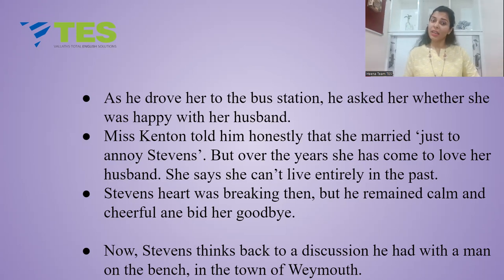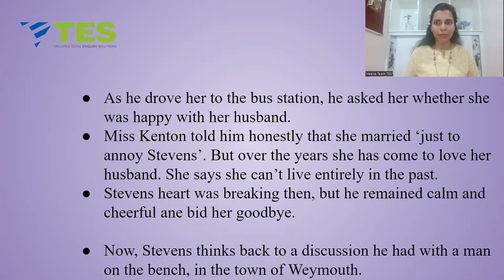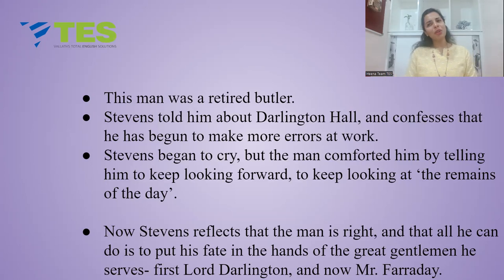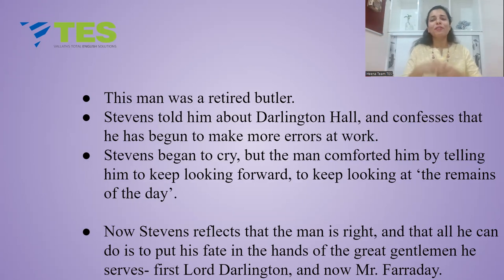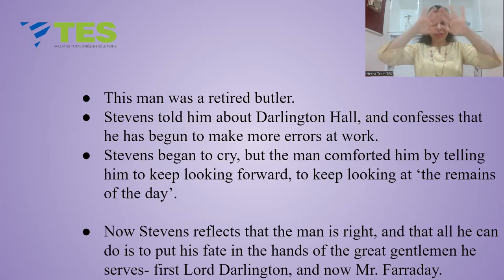Stevens thinks back to a discussion he had with a man on a bench in the town of Weymouth, where he was sitting by the beach. This man was a retired butler. Since he was a butler, Stevens could open his heart to him. Stevens told him about Darlington Hall and confessed that he has begun to make more errors at work. Because of his age and mental state, he can no longer concentrate as well. Stevens began to cry, but the retired butler comforted him and told him to keep looking forward — to keep looking at the remains of the day.